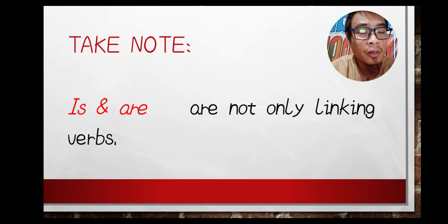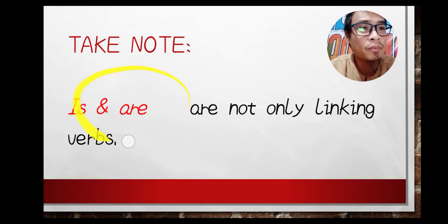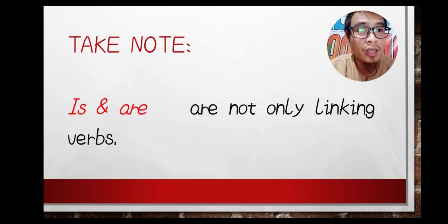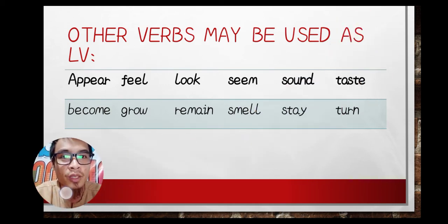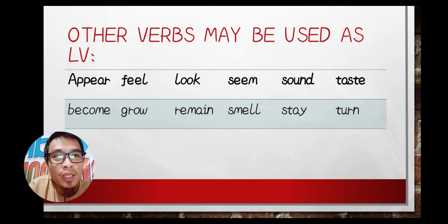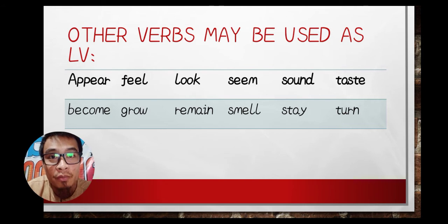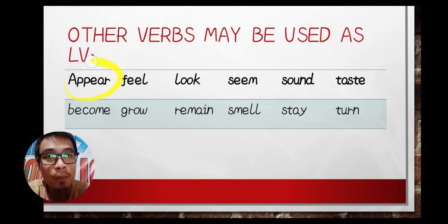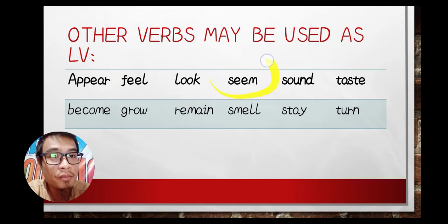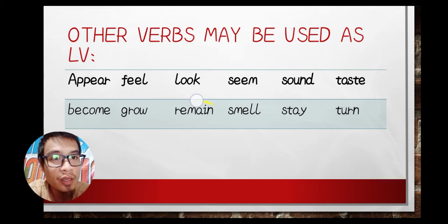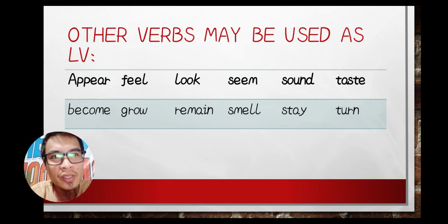Take note, guys: 'is' and 'are' are the basic linking verbs most people think of, but linking verbs are not only 'is' and 'are.' Other verbs may also be used as linking verbs, like: appear, feel, look, seem, sound, taste, grow, remain, smell, stay, and turn.